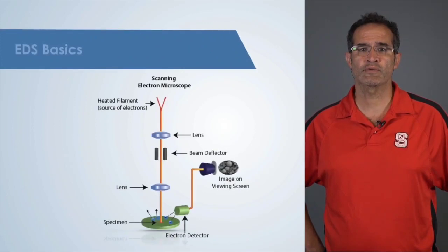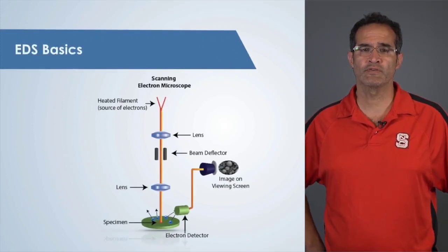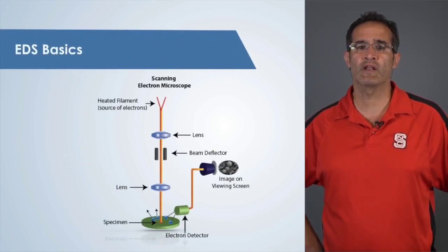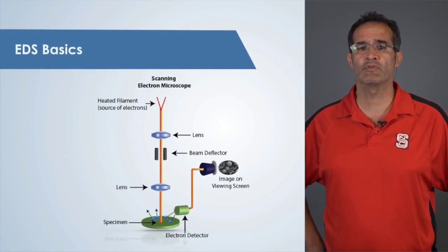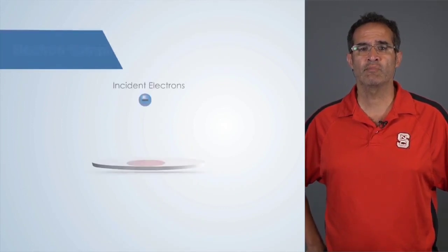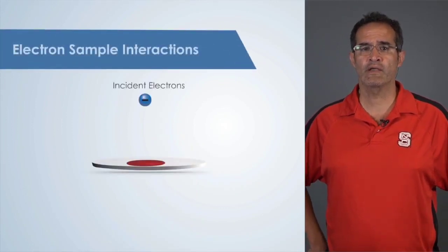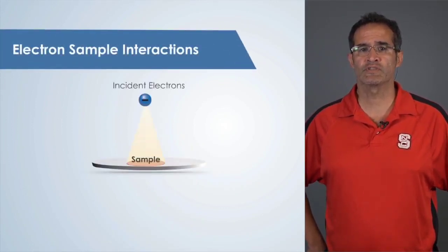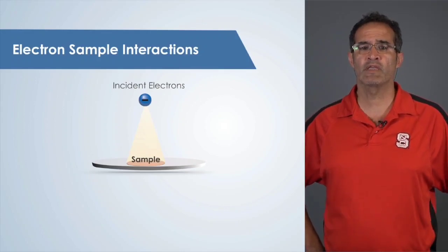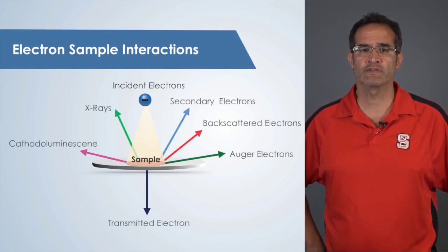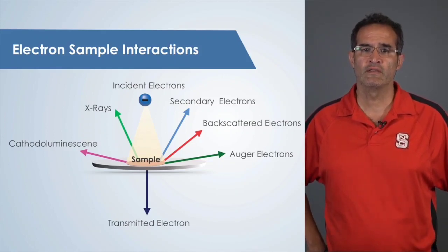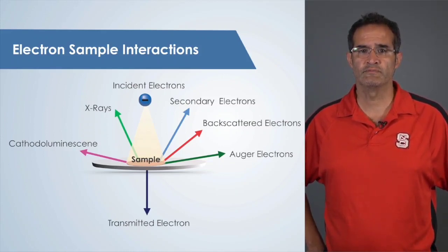You may be wondering how a microscope, a tool that is used primarily for imaging, can provide elemental or chemical information. In an electron microscope, a high-energy electron beam is accelerated towards a specimen. When the electron beam hits the atoms that make up the sample, electron signals are generated such as secondary and backscattered electrons. These electron signals are used to produce an image of the sample.